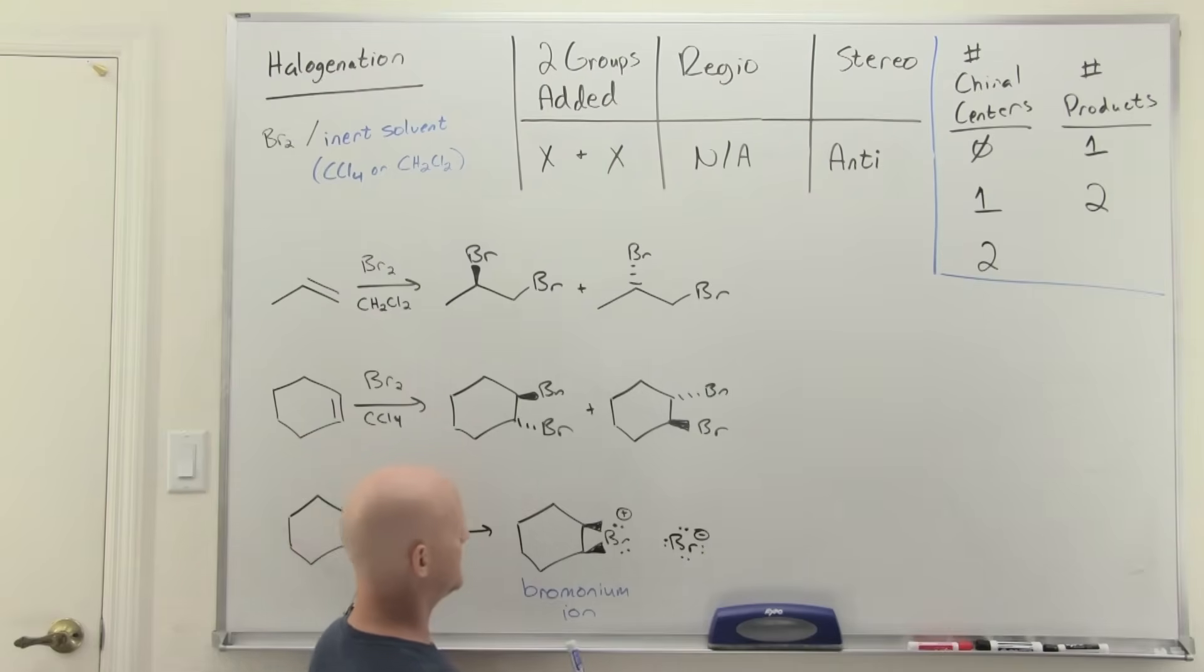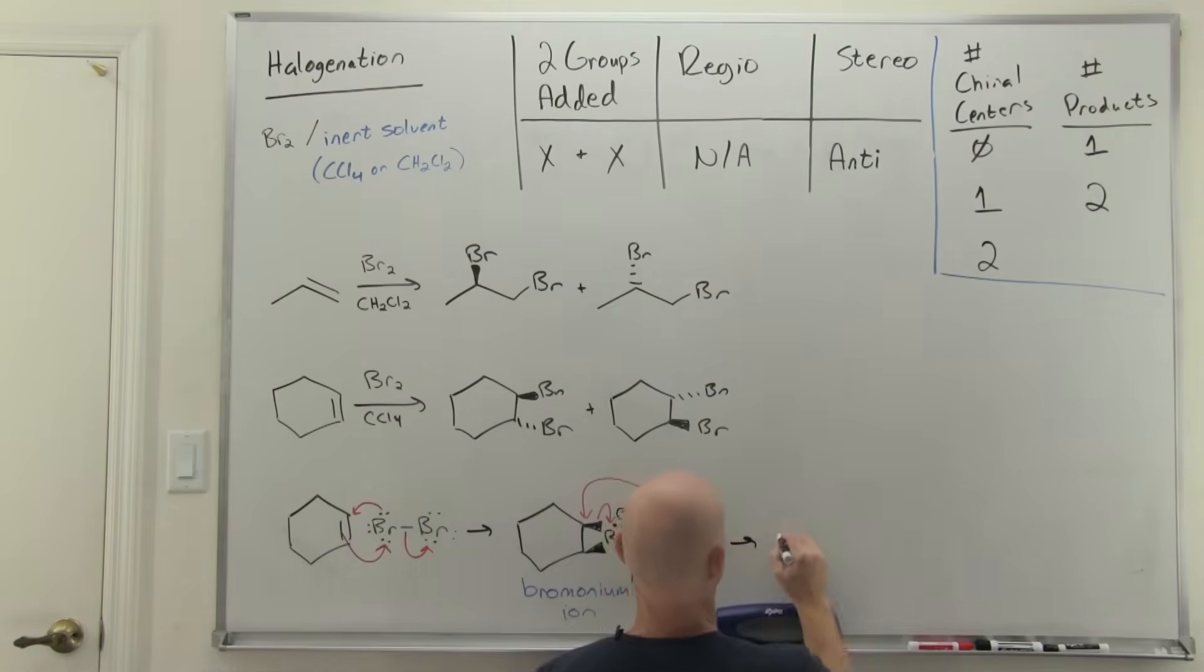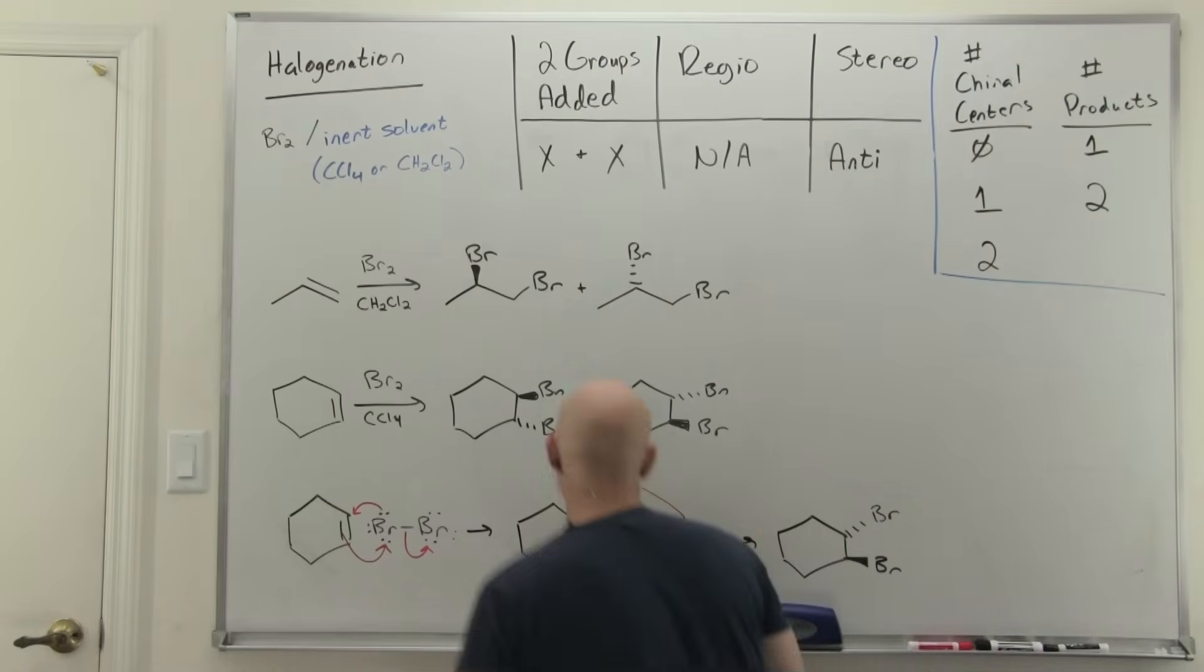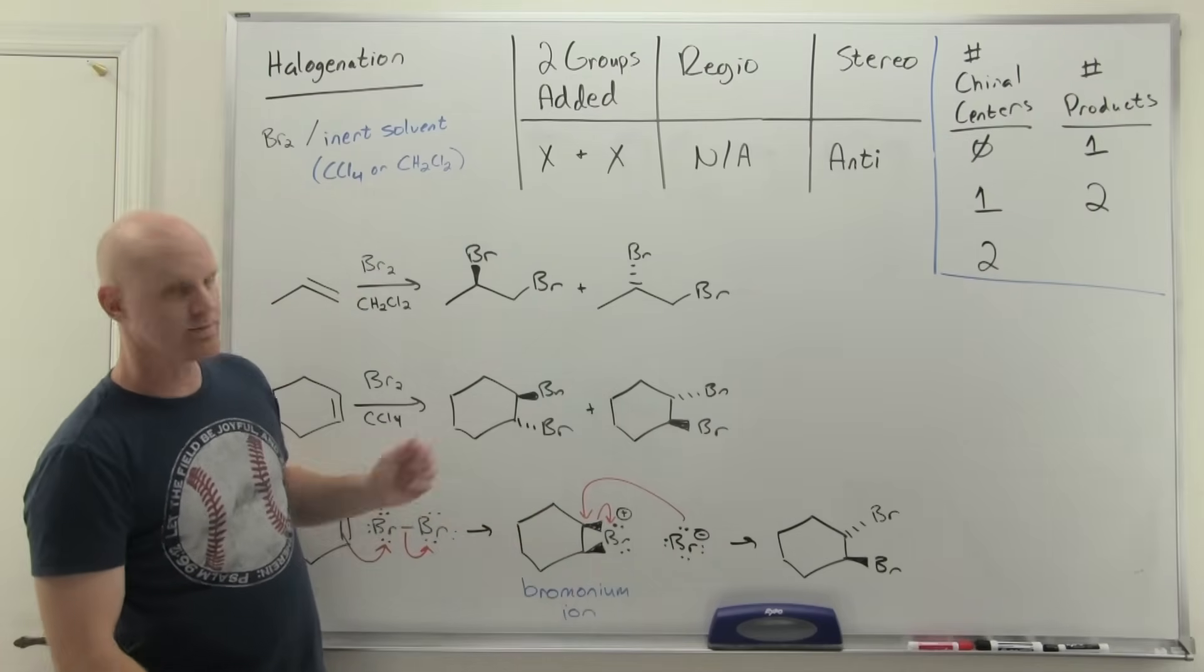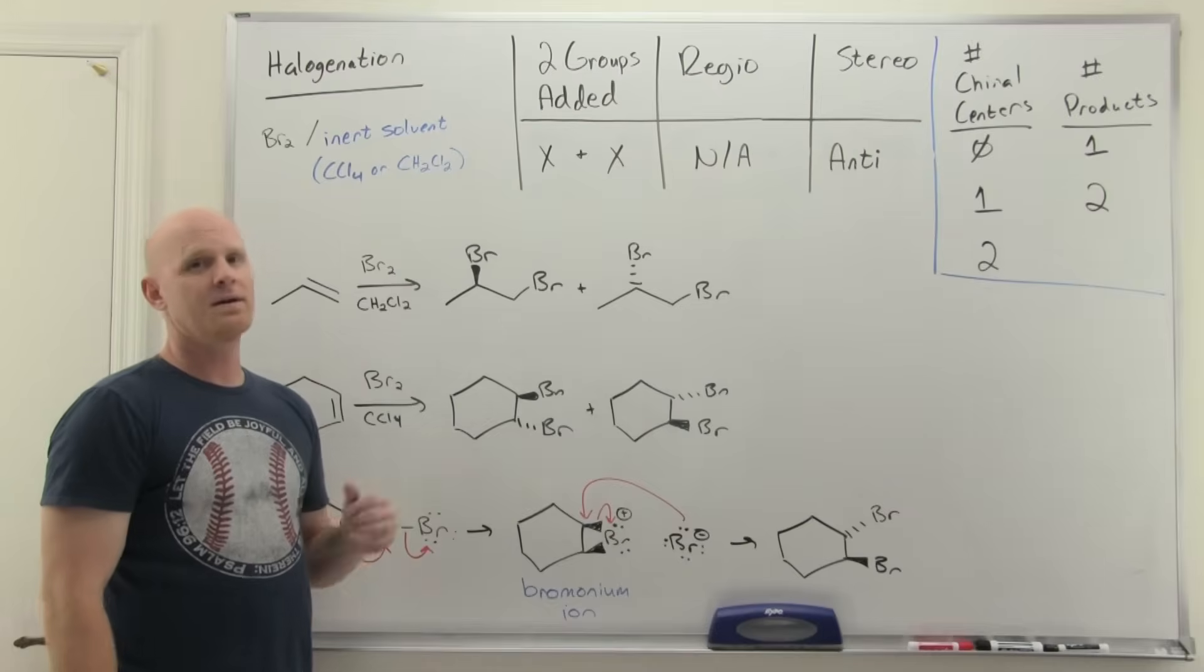In this case, it totally doesn't matter. We'll come and do backside attack. When you attack an sp3 carbon, it's got to be from the backside, and it's backside relative to the leaving group. In this case, the leaving group is the bromine. I realize the bromine is not leaving the entire molecule, but it is leaving that carbon. As a result, the top carbon had a bromine attached as a wedge. The new one is going to be attaching from the back face as a dash. Had I decided to attack the bottom one instead, then it would have been the other enantiomer instead. That's why we do the anti-addition, this backside attack of an sp3 carbon in the intermediate.